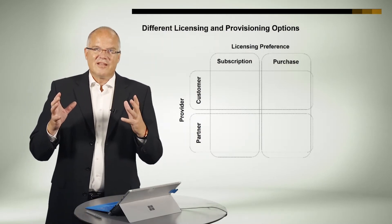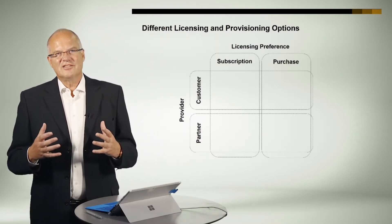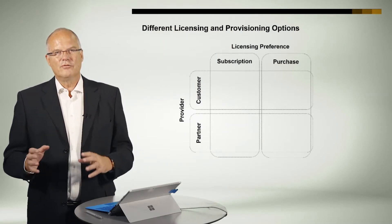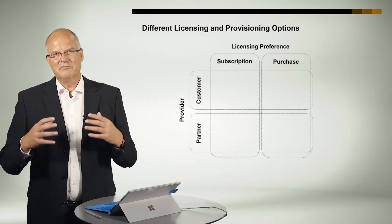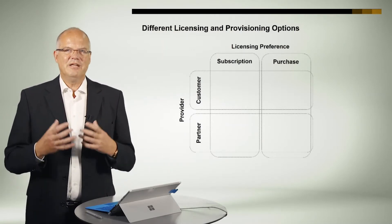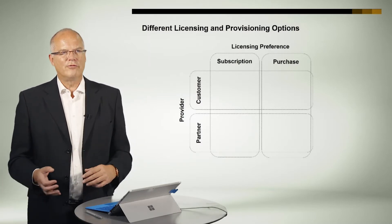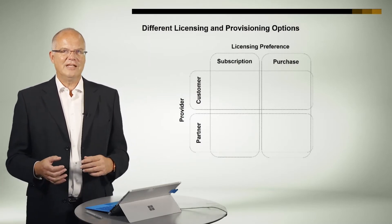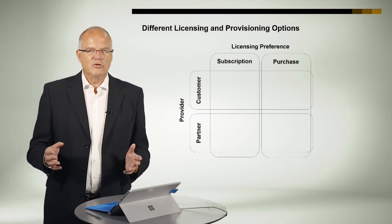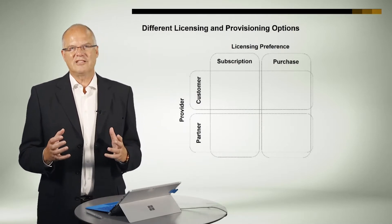When I talk to customers, some of them say, 'Rainer, we are a bit confused about the portfolio of SAP. What are you offering? Why are you offering so many things?' And then I mostly draw this simple 2x2 matrix.